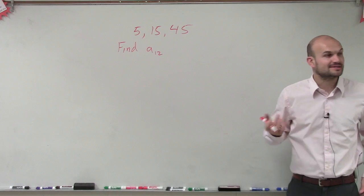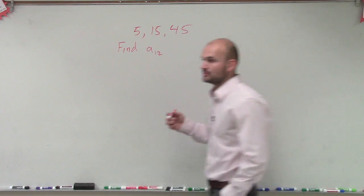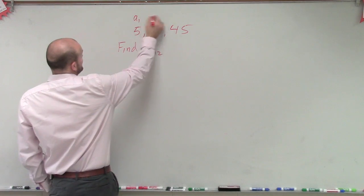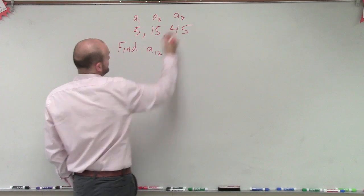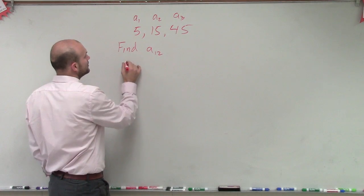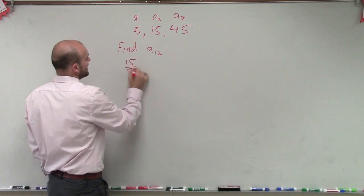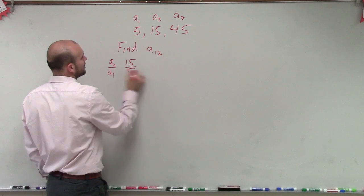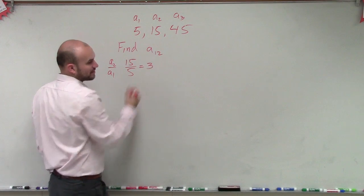But we can determine, is this going to be a geometric? And so what we'll have to do is, if we say this is a_1, a_2, a_3, let's go and make sure that we have a ratio. So we do 15 over 5, which would be a_2 over a_1, and 15 over 5 equals 3.